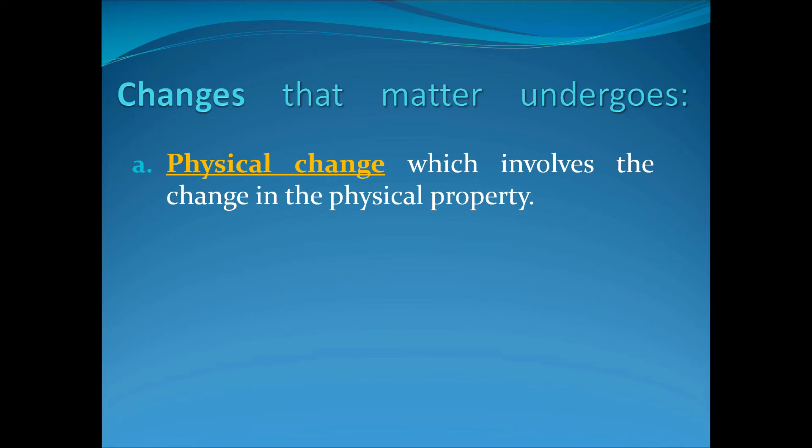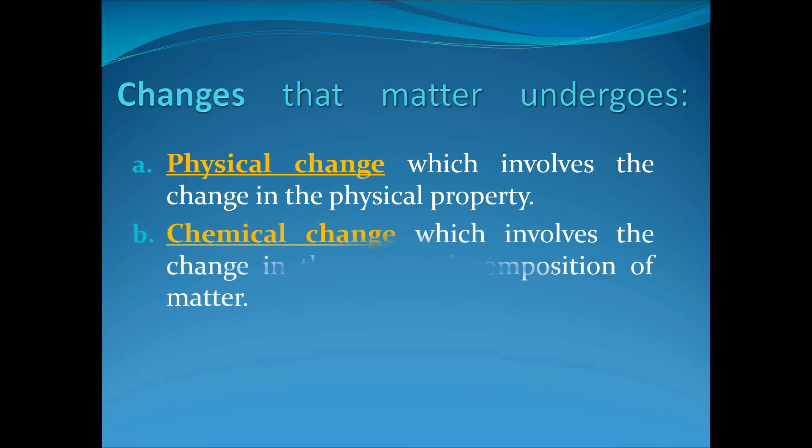While the chemical change involves the change in the chemical composition of matter. In a chemical change, substances are formed that are entirely different, having different properties and composition from the original material. The new substances need not in any way resemble the starting material before the change took place.